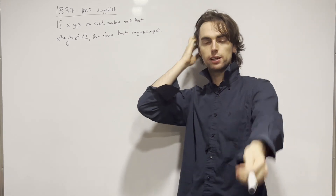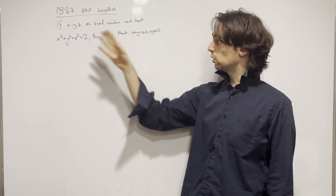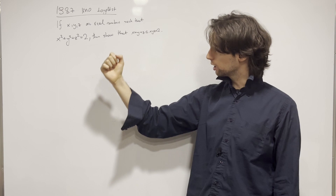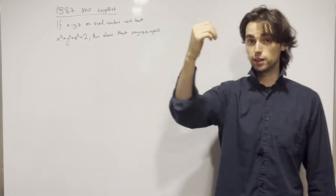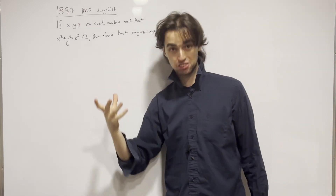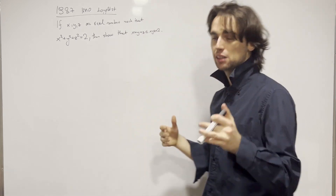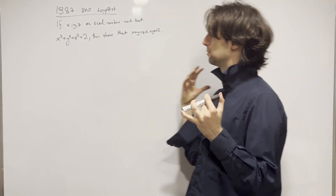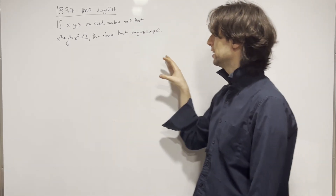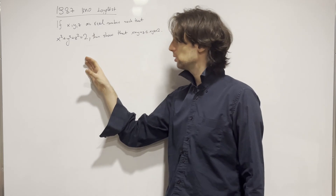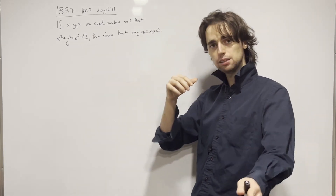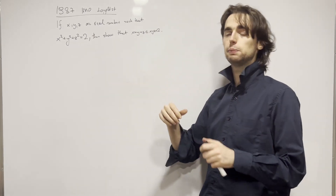Hello fellow problem solvers. Today we are going to be doing this inequality from the 1987 IMO long list, proposed by Great Britain. It's a very non-standard inequality. I invite you to pause and try it out for a minimum of half an hour, ideally an hour. If you'd like to go along with us, put your first ideas out on paper for the next 15 minutes, and now let's begin.